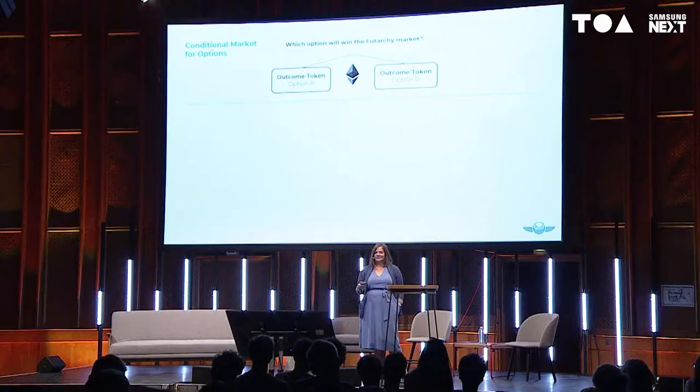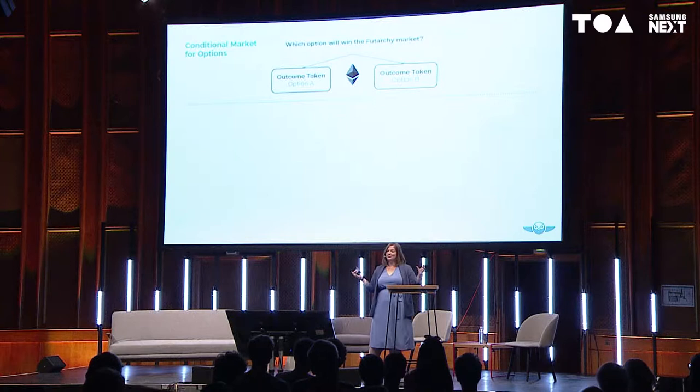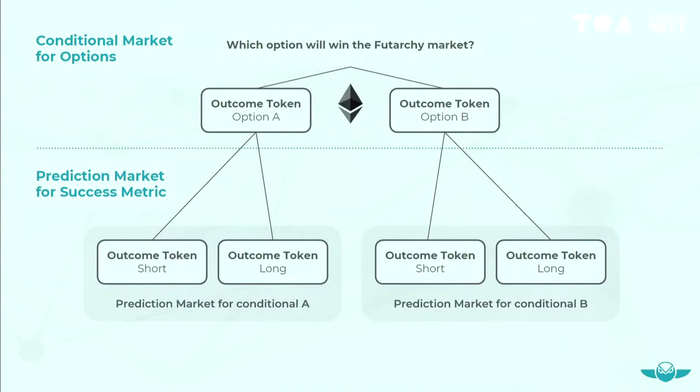How does it actually work under the hood? You create two top-level outcome tokens — outcome token A and outcome token B — in this case: will the CEO be fired, yes or no. Then you create two second-level tokens for each, so four tokens in total: one short and one long for firing the CEO, and one short and one long for not firing the CEO. These can trade individually — you do not need to partake in both markets. If you don't want to partake in one market, you just hold on to both tokens in that market and can always exchange them back for the money you put in.